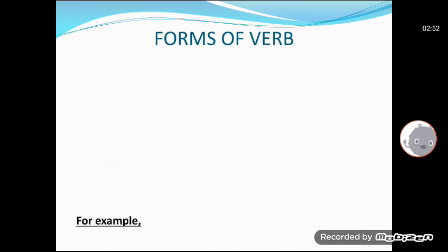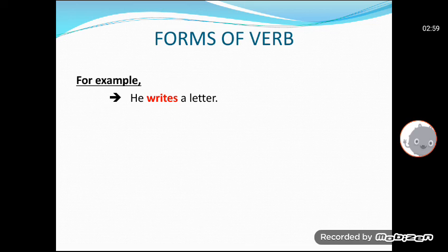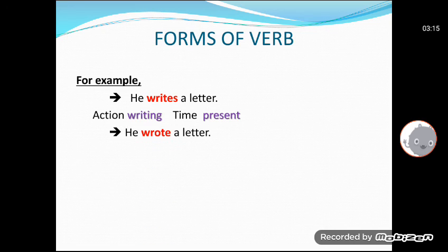Look at the example forms of verb. Now, 'He writes a letter.' The verb is in red color and I have bolded it so that you can understand this is a verb. This is telling us about the time and about the action—doing two functions. What is the action? Writing is happening. And what is the time? Present. Same like 'He wrote a letter.'